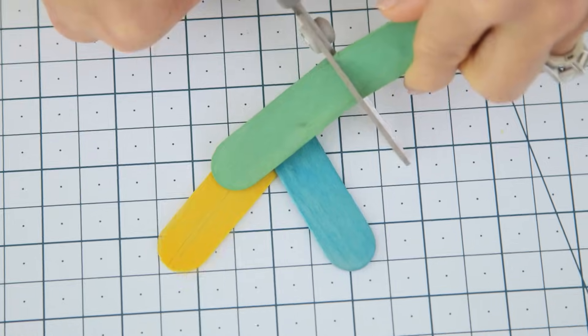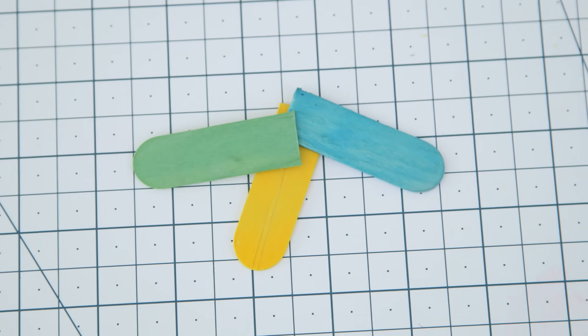We're going to start by cutting our popsicle sticks to about two and a half inches each. You can adjust this slightly for smaller or larger hands but just make sure that they're all the same length.